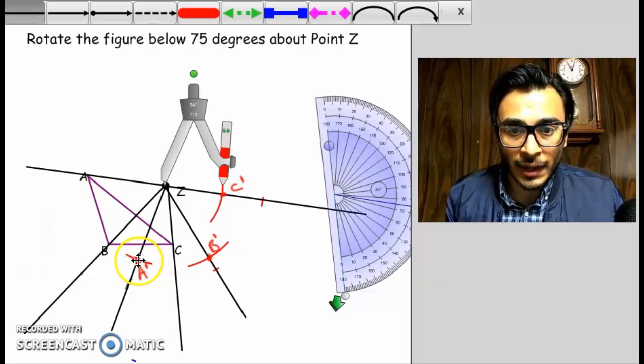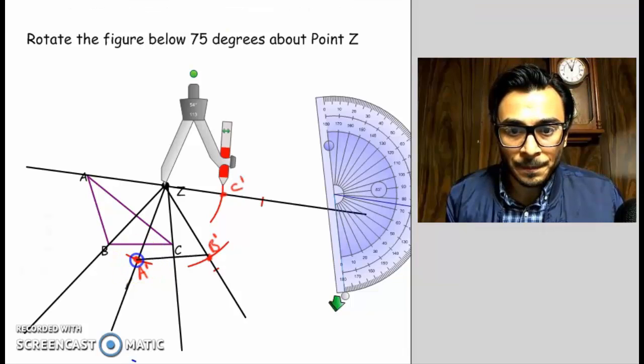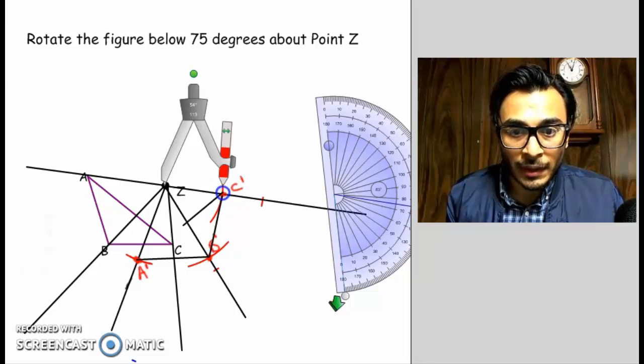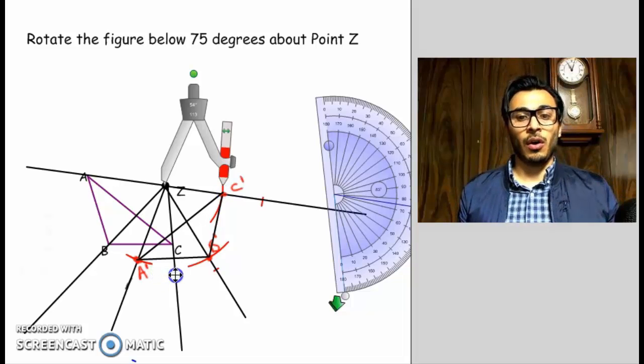So all that's left to do now is take a straight edge and connect A prime to B prime, B prime to C prime, and C prime to A prime. And we are done.